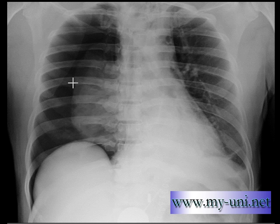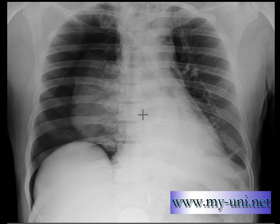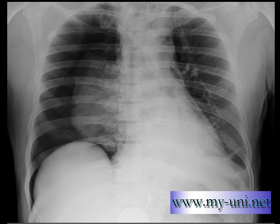The right heart border is not visible only because the lung is collapsed. There is no air within the lung — the air is leaking out of the lung — and because the heart and the collapsed lung have very similar densities, the border of the heart is not visible anymore.